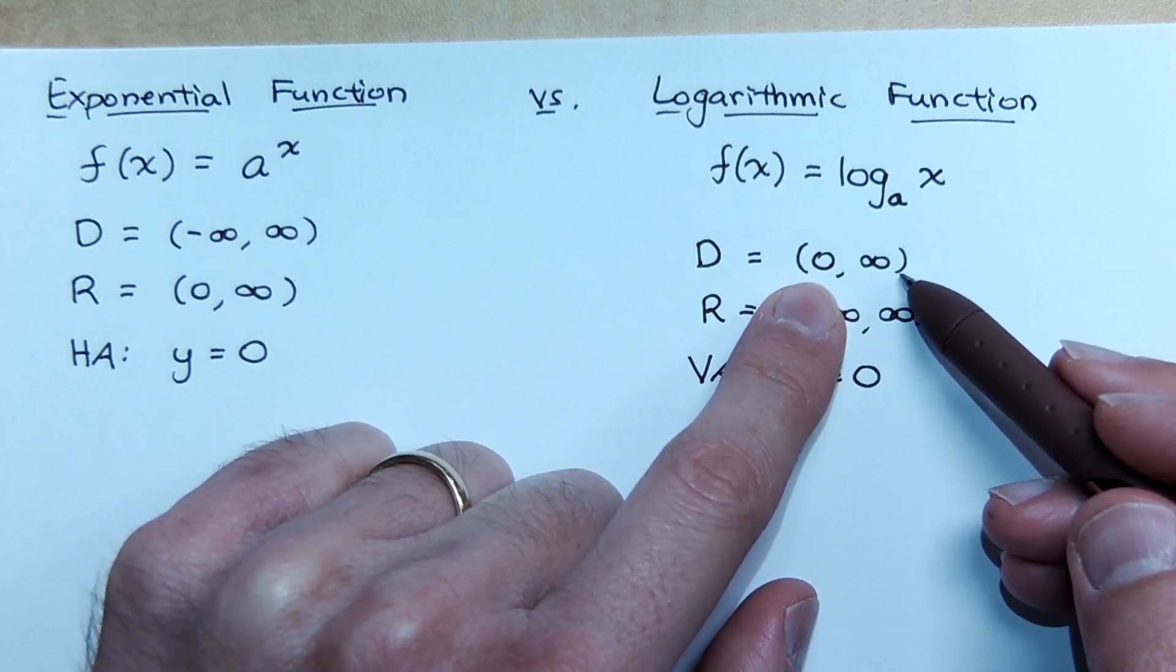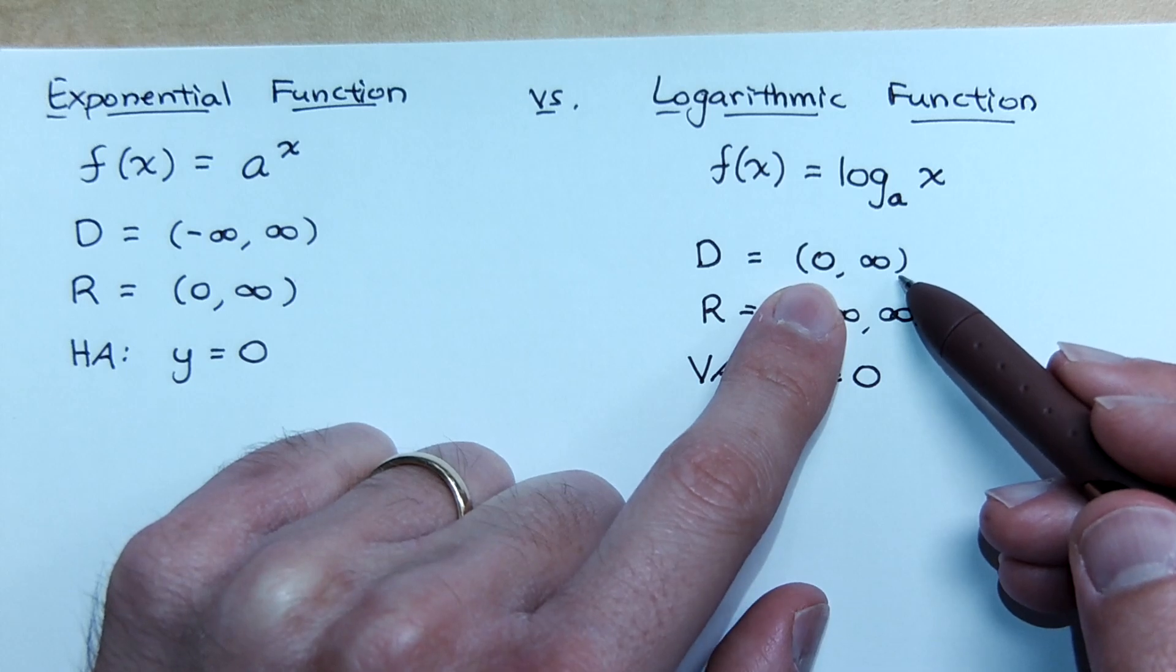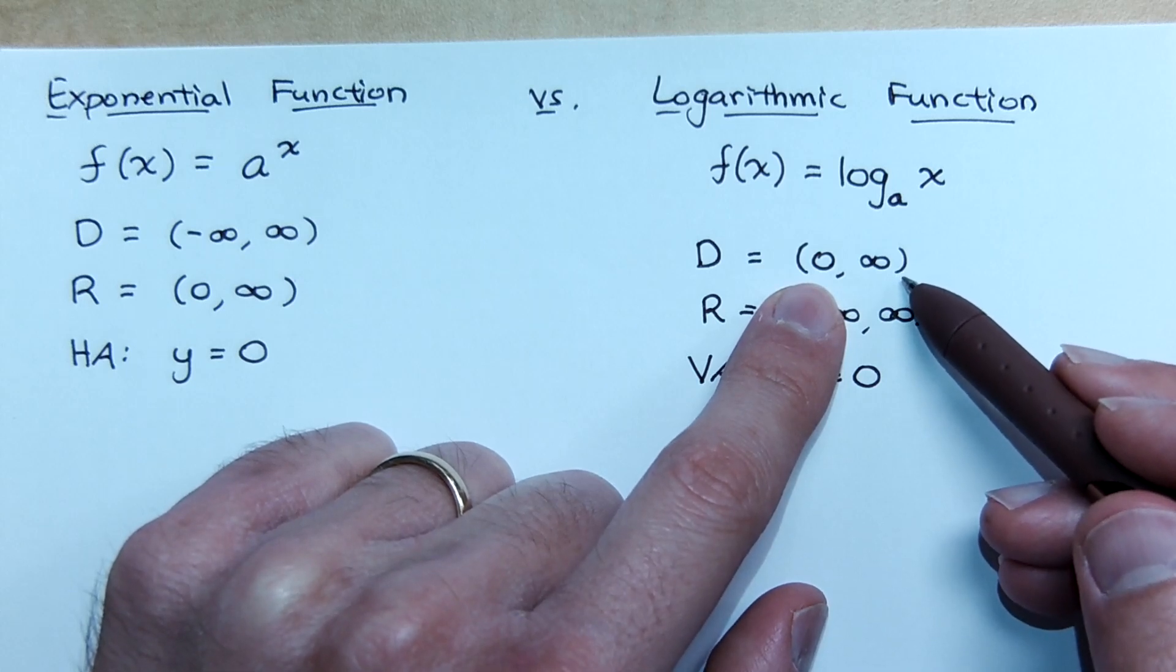The logarithm does not include zero. So if you see a logarithm in your function, you know that you have a restricted domain.